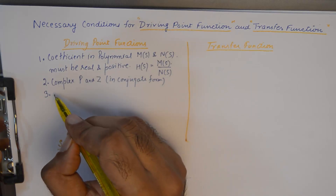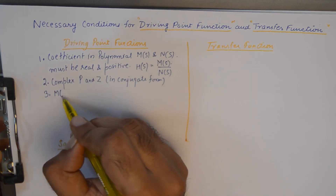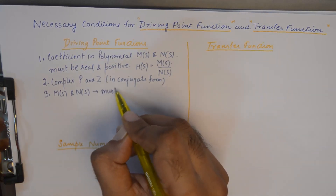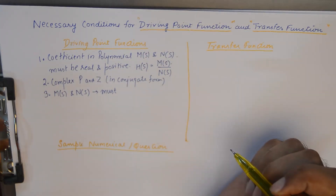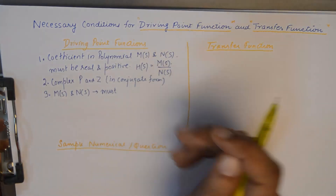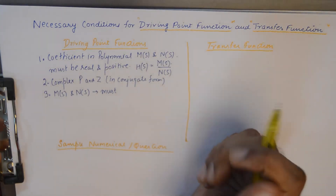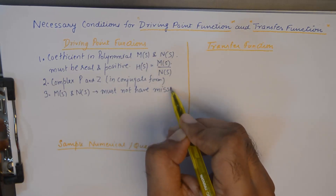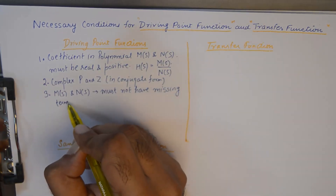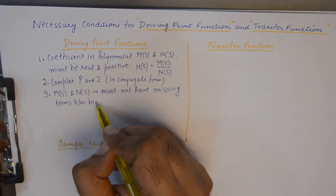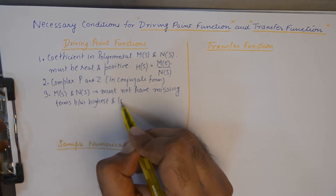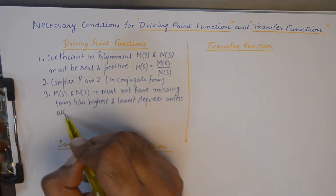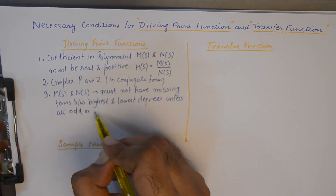The third important condition is that both polynomials M(s) and N(s) must not have any missing terms between the highest and lowest degree, unless all odd or even terms are missing.